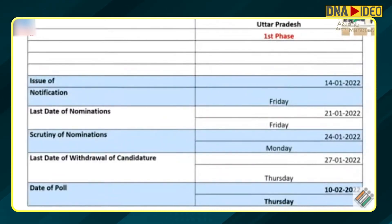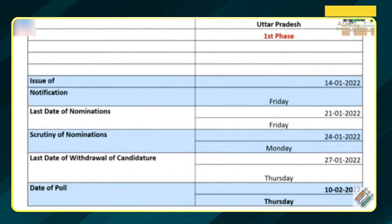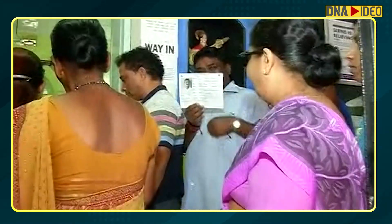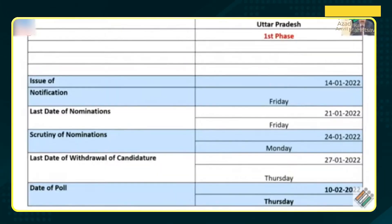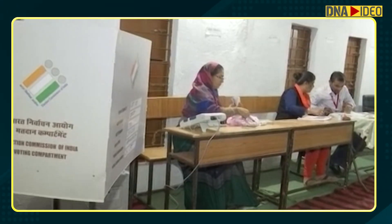The first date of the issue of notification will be 14th January 2022, starting from Uttar Pradesh — this is the first phase of Uttar Pradesh. Issue of notification: 14th January. Last date of nominations: 21st January. Scrutiny of nominations: 24th January. Last date of withdrawal of candidature: 27th January. Date of poll: 10th February 2022.